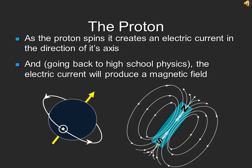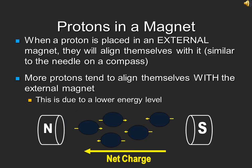As a proton spins about its axis, it produces an electric current. You may recall that an electric current will produce a magnetic field. In the case of this spinning proton, a magnetic field is produced in the same pattern as that which is produced around a bar magnet. We don't feel the effects of this magnetic field, however, because all the protons are pointing in random directions, and consequently, their magnetic fields cancel each other out.